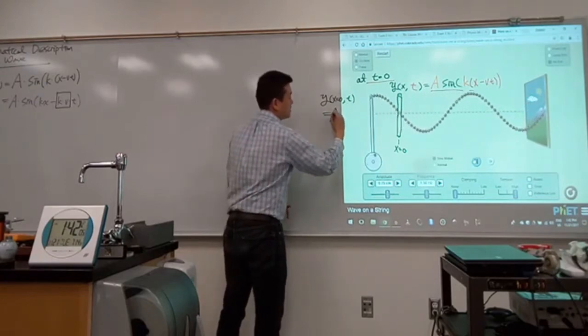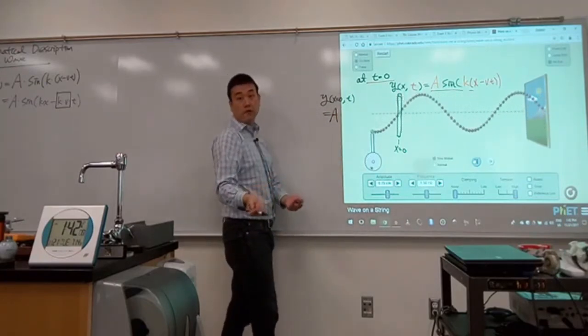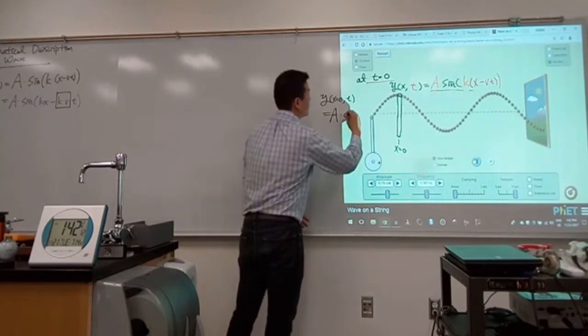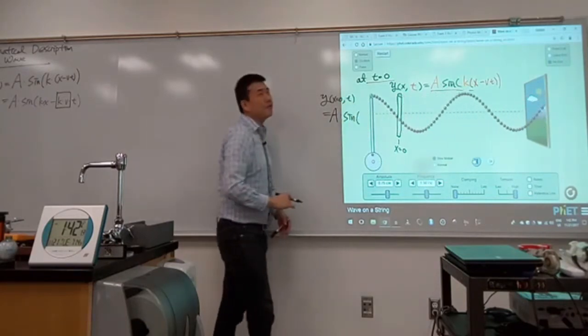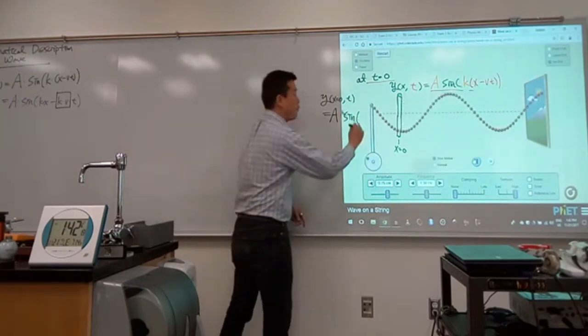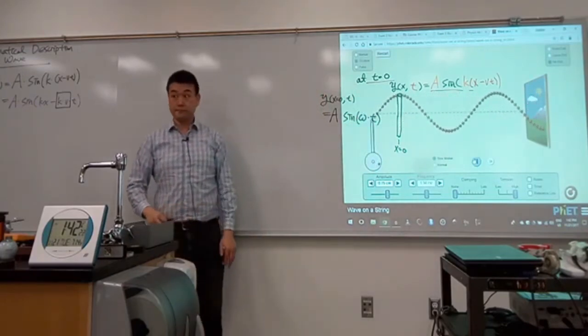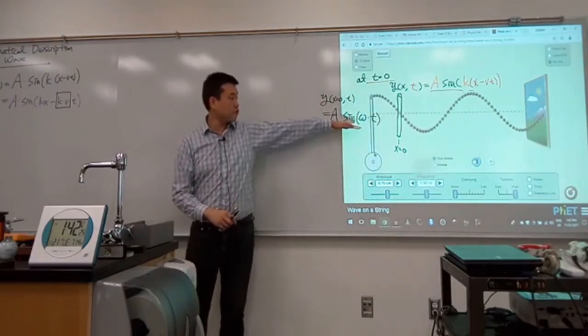You could say this is some amplitude of the oscillation times the trigonometric function, sine or cosine, sine of, and when we are describing oscillation, there was angular frequency or the natural frequency omega times t. So this is what I want you to remember.